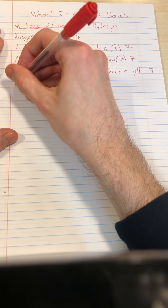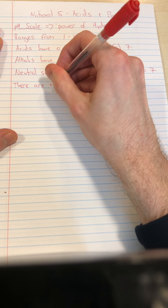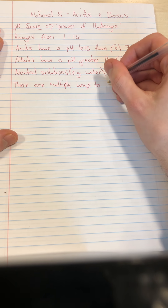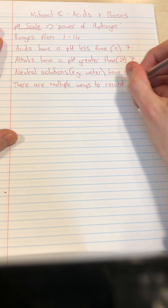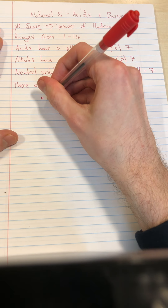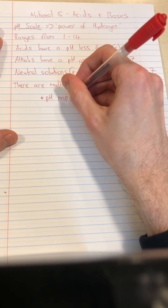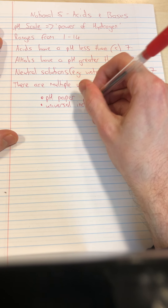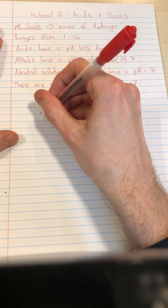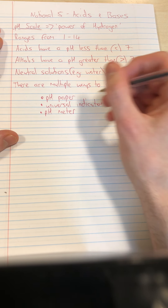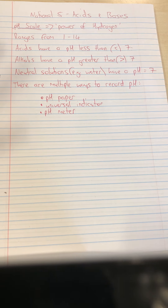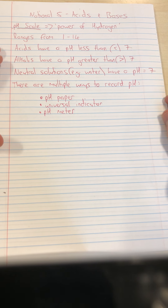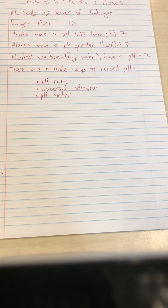There are multiple ways to record pH. We could use pH paper, we could use universal indicator, or we could use a pH meter. These are all things you've come across in second year — don't worry if you've forgotten. I'm going to do a quick demonstration now.